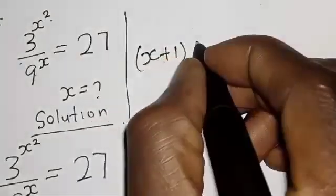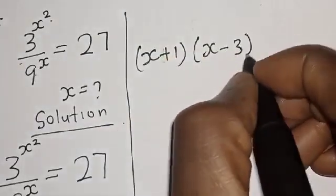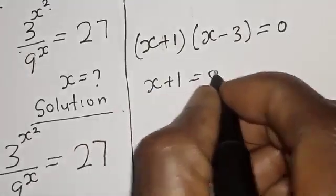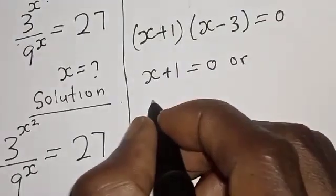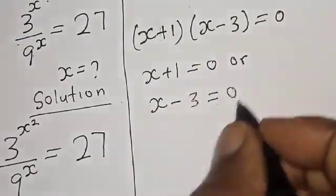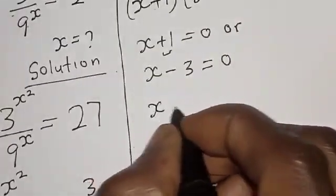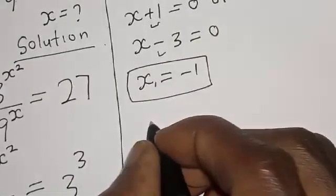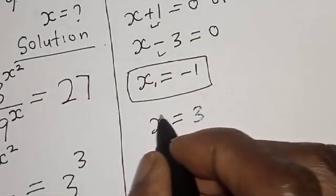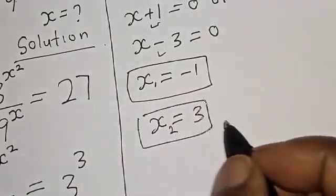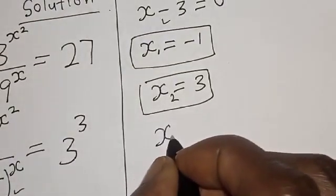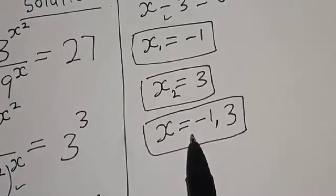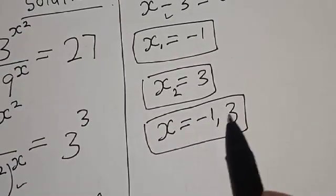So (s plus 1) multiplied by (s minus 3) is equal to 0. Therefore s plus 1 equals 0 or s minus 3 equals 0. From the first, s is equal to minus 1 (that is s₁), and from the second, s is equal to 3 (that is s₂). Therefore the values of s are s equals minus 1 and s equals 3. That is our final answer. If you love the class, please like, share, comment, and subscribe. Thank you.